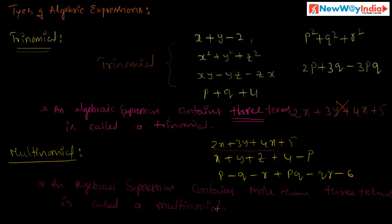So these are the different types of algebraic expressions. An expression containing one term is called a monomial. An expression containing two terms is called a binomial. An expression containing three terms is called a trinomial. An expression containing more than three terms is called a multinomial. Next, we will discuss what a polynomial is in the next session.